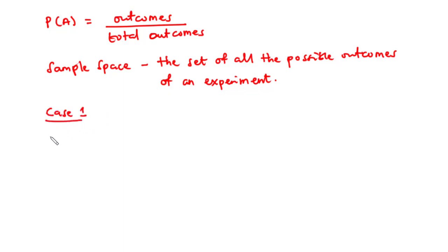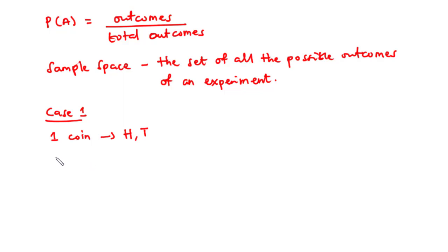For case one, consider the experiment of tossing a fair coin once. If you toss a fair coin once, you can either have a head or a tail — two possible outcomes. So the sample space for this experiment is {head, tail}.